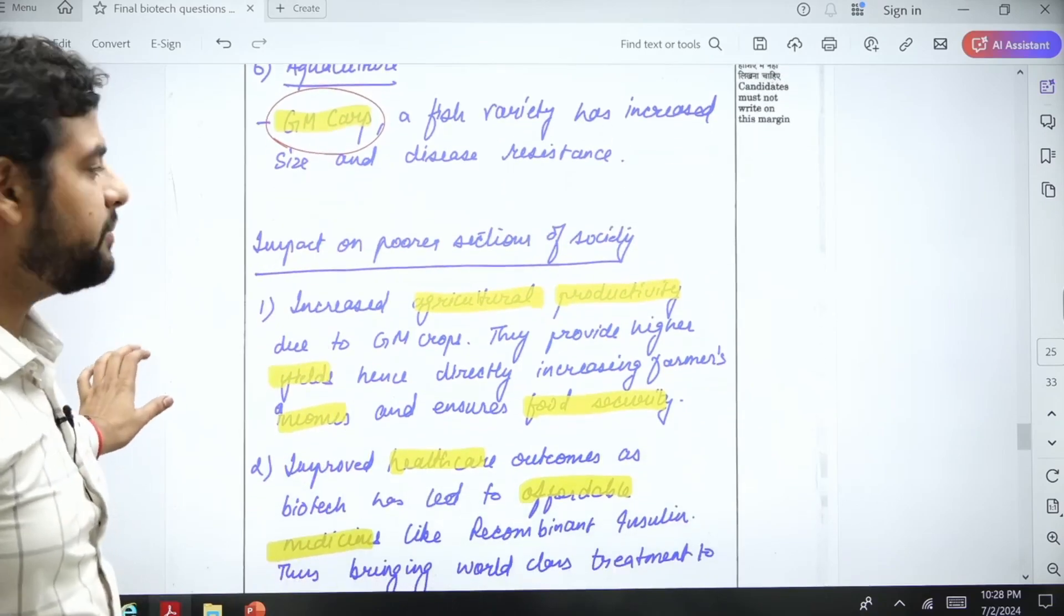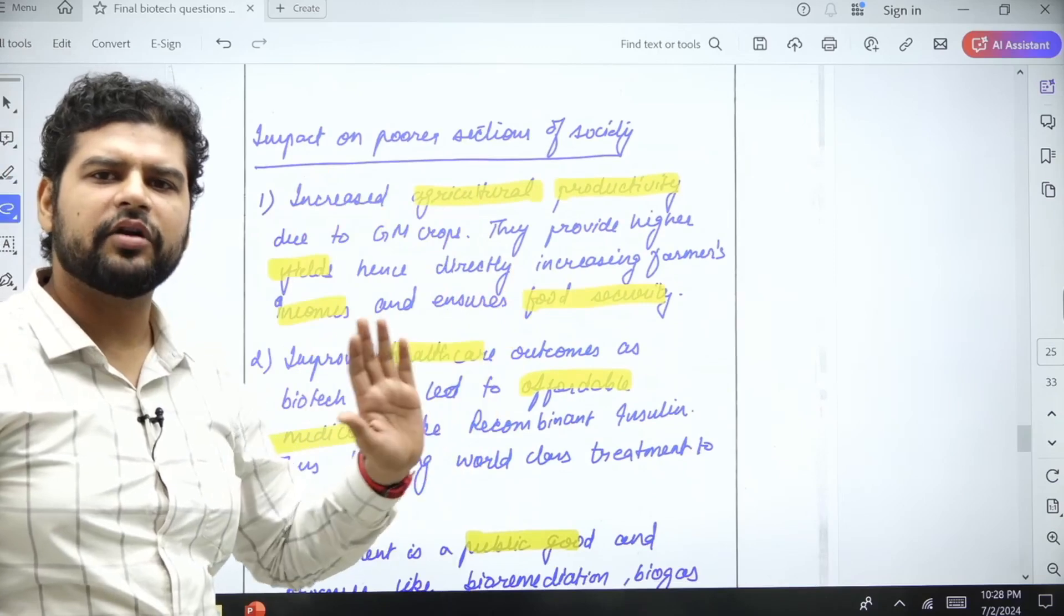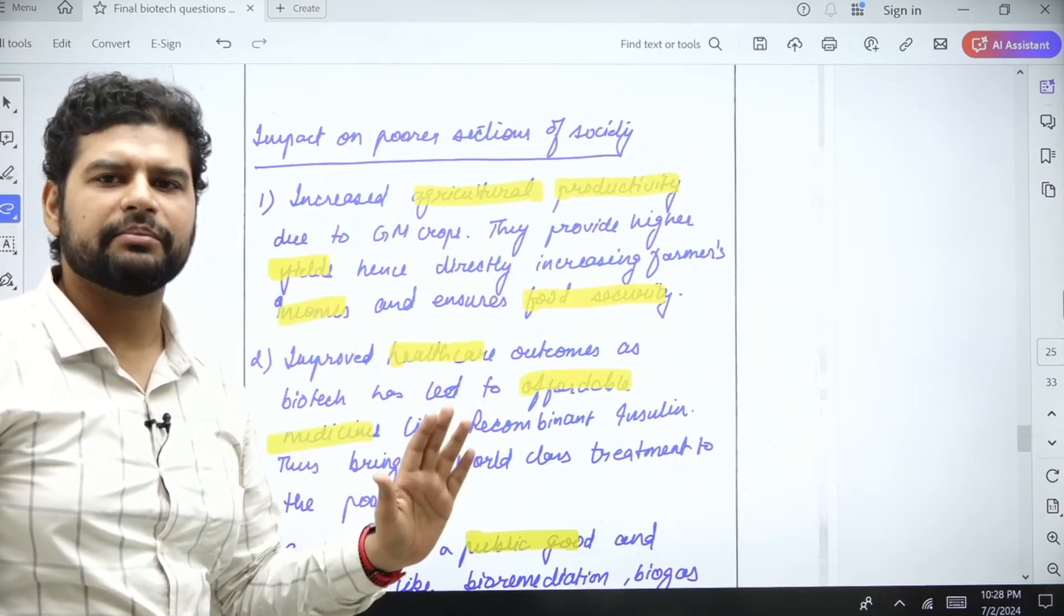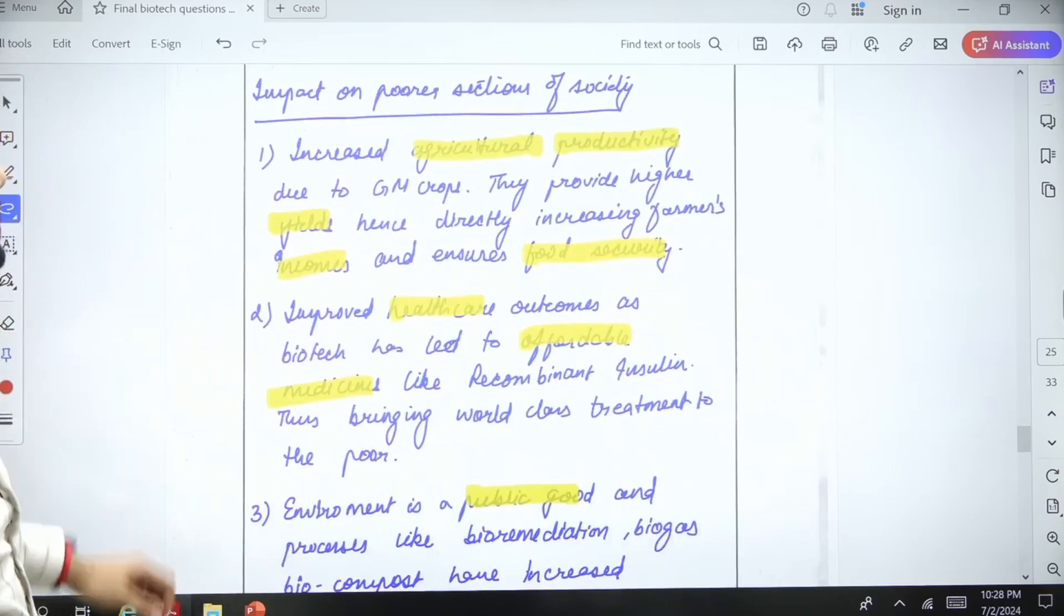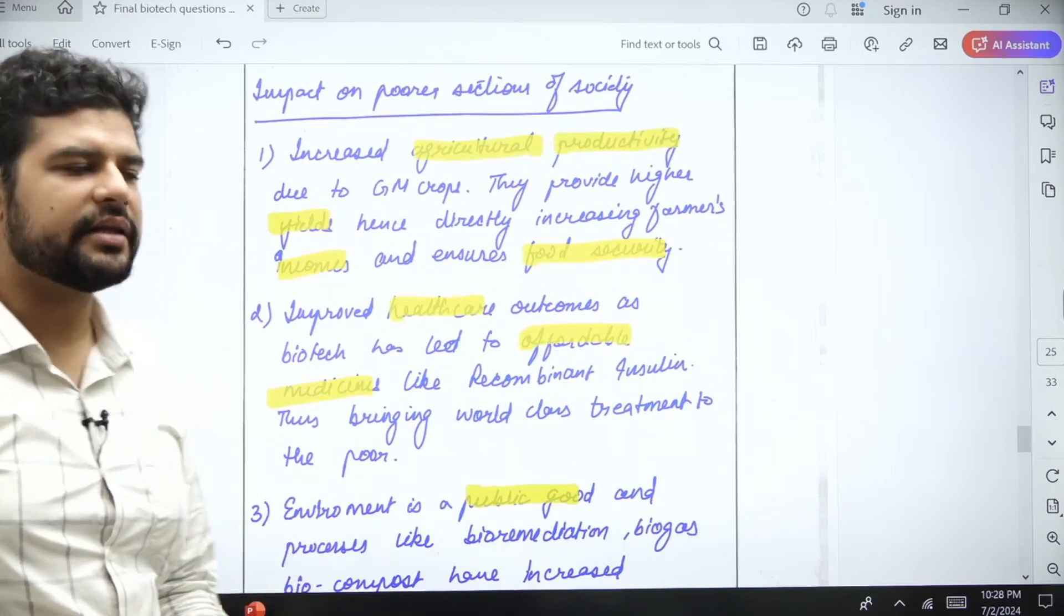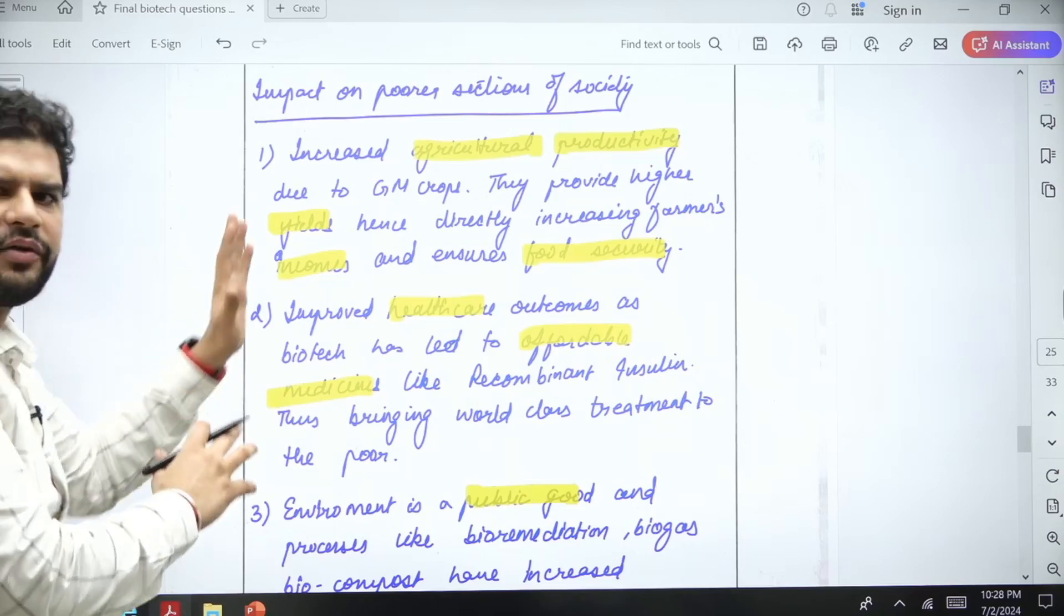All these examples are direct examples. We have not explained any process. We have not talked about any theory. We have just given the examples. Next question was asking impact on poorer sections of the society.